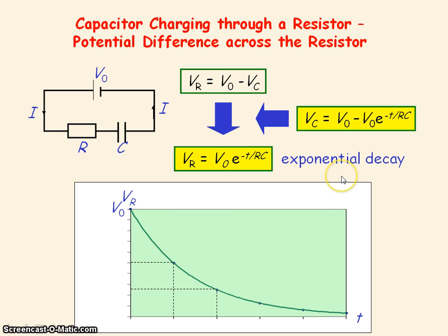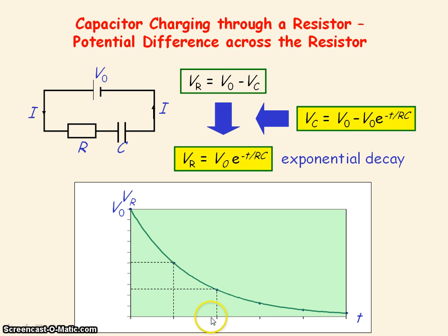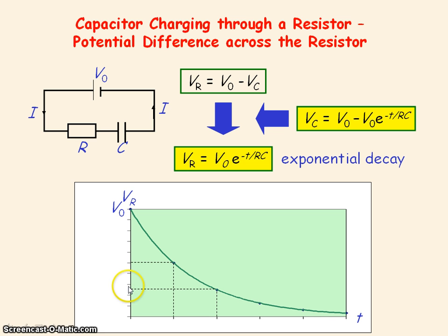An exponential decay follows this constant ratio property: in equal intervals of time, the voltage will fall by the same fraction or the same ratio.